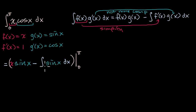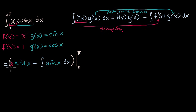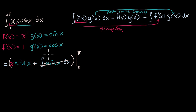What is the indefinite integral of sine of x dx? We know that the derivative of cosine is negative sine of x. So we can bring this negative into the integral and say plus the integral of negative sine of x. The anti-derivative here is cosine of x. So this becomes cosine of x.